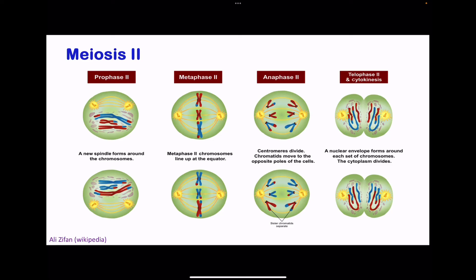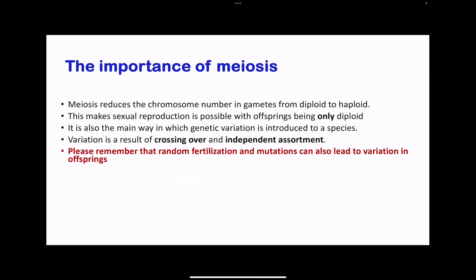Moving on to meiosis II. This is similar to meiosis I; however, in prophase II there is no crossing over, and in metaphase II there is no independent assortment. The centrioles move to opposite sides, spindle fibers are visible, and the chromosomes are visible due to condensing. In metaphase II, chromosomes align at the metaphase plate with spindle fibers attached to the centromere — there is no pairing, and unique chromosomes align individually. In anaphase II, the spindle fibers contract and the sister chromatids are pulled apart. In telophase II and cytokinesis, the cell begins to divide and the nuclear envelope is reformed. Meiosis produces gametes that are haploid, so that when they fuse, diploid offspring are produced.